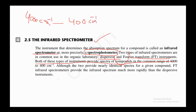Although the two provide nearly identical spectra, a Fourier transform instrument provides the infrared spectrum much more rapidly than the dispersive instrument. FTIR spectrometers are better than dispersive ones, so one should always select the FTIR spectrophotometer to record the IR spectrum.